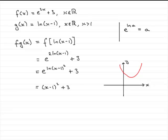So essentially, what we've got is that this point here has been moved across one unit from the origin and up 3. So it's got coordinates 1, 3. And this is essentially the graph of fg of x.